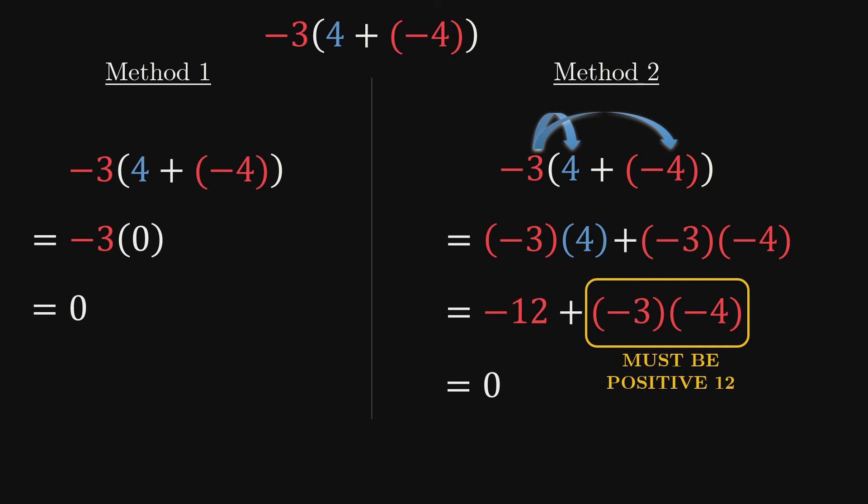Notice we've just shown that a negative times a negative has to be a positive. And that's it! Through this example alone, we can see why the result of multiplying two negatives must be a positive.